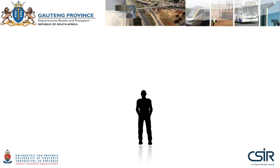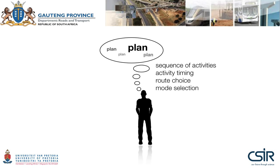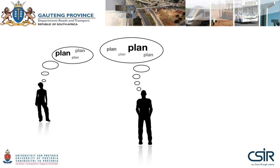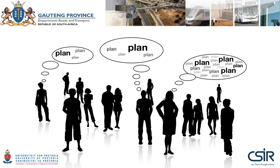Meet Joe. He's a normal guy like you and me. In his head, he's got a few plans. By a plan, we mean the sequence of activities, the timing of those activities, and the route and mode between each pair of activities. From experience, we build up a small selection of good plans — and here we represent that with the larger the font, the better we expect that specific plan to perform. With performance, we mean the trade-off between monetary and time cost. Here's Jane — she too has a number of plans she's contemplating. And as we know, some people just have more plans in their heads than others.